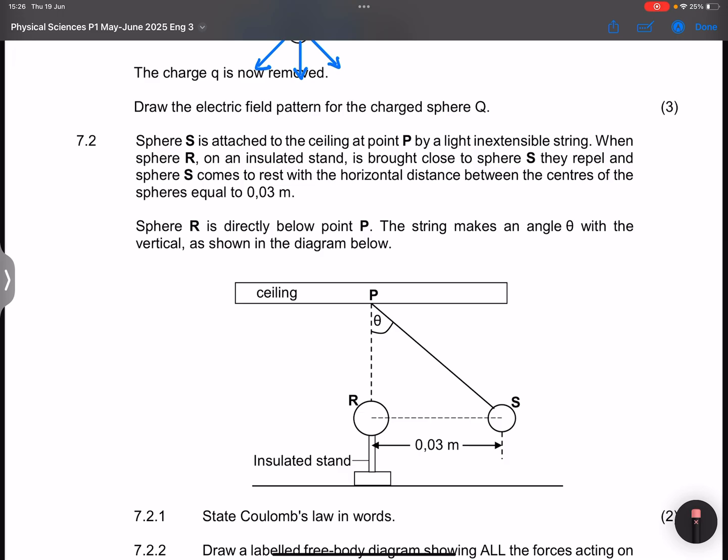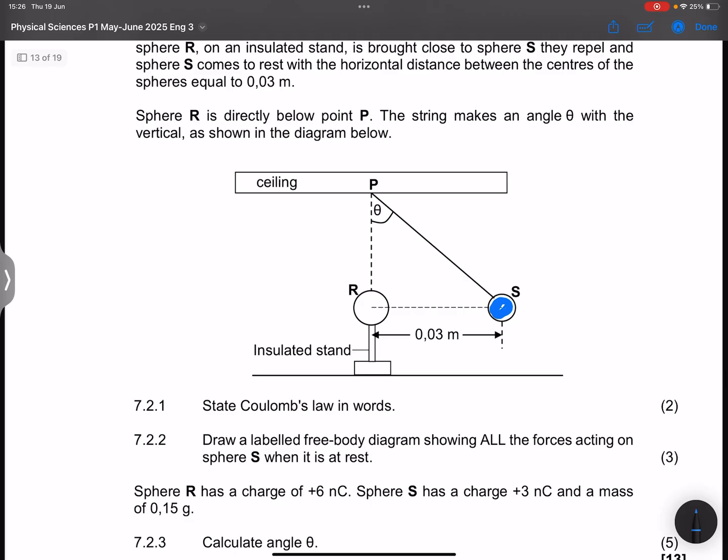Let's go to the next question. They say to us sphere S is attached to the ceiling at point P by a light inextensible string. When sphere R on an insulated stand is brought closer to sphere S, they repel and sphere S comes to rest. We know that sphere S is at rest, which means the forces that are acting on sphere S must be at equilibrium. It comes to rest with the horizontal distance between the centers equal to 0.03 meters.